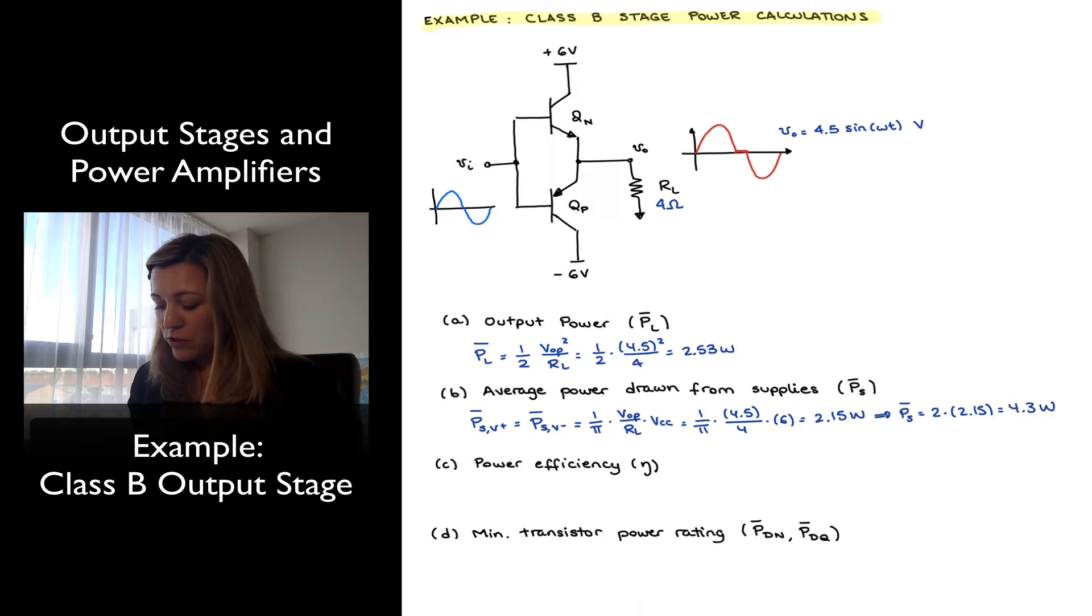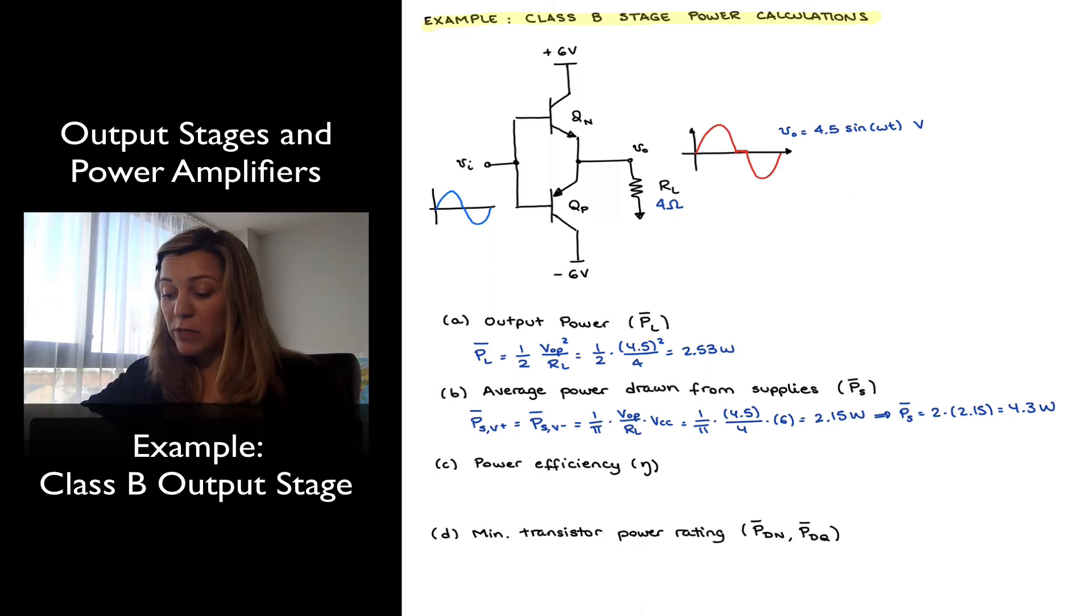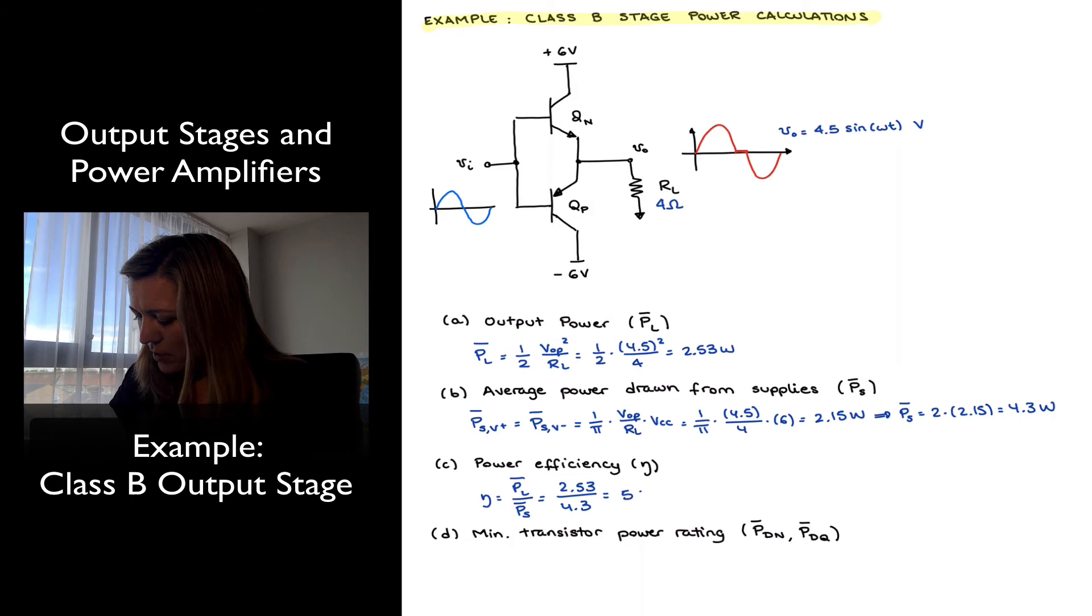My power efficiency for this particular circuit under these particular circumstances, meaning with those supplies and a maximum or peak output voltage of 4.5 volts, is going to be equal to PL over P-s, or 2.53 watts divided by 4.3 watts, which is equal to 58.8%.